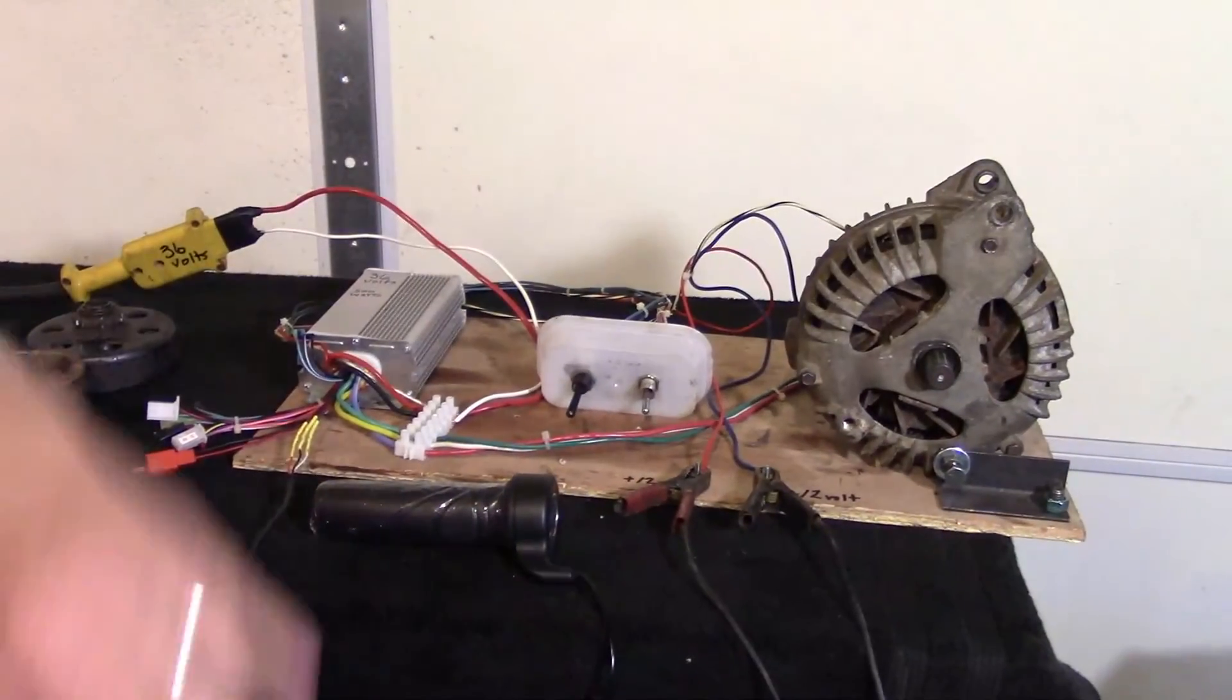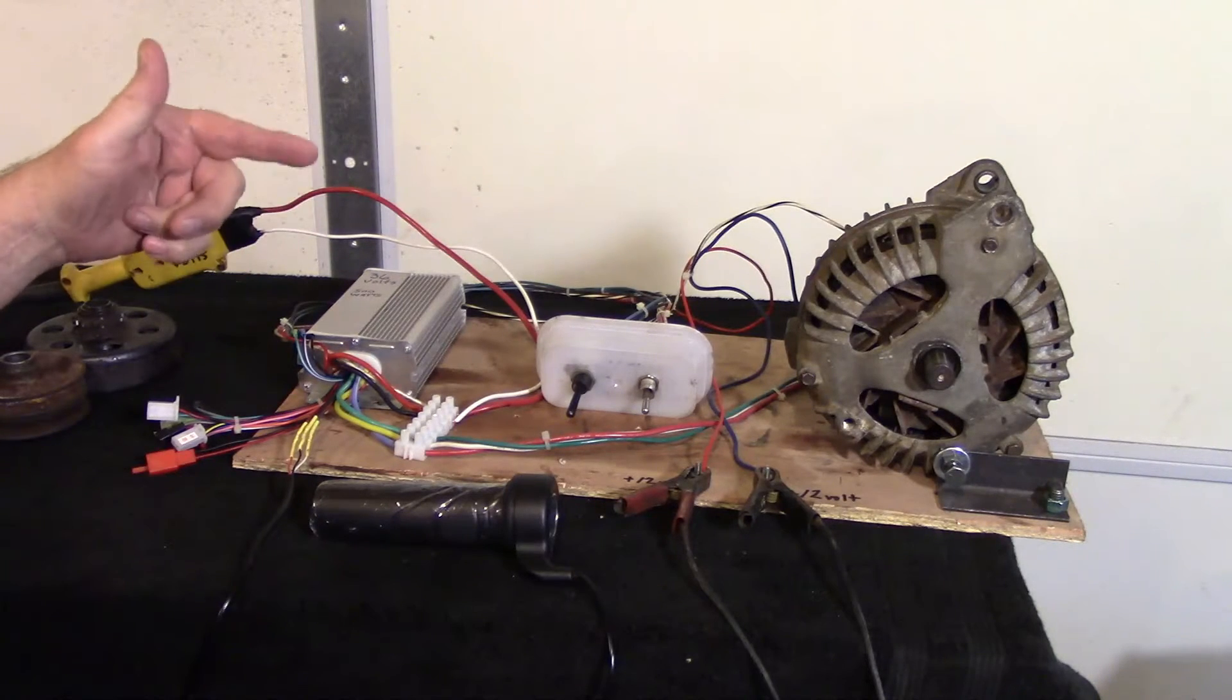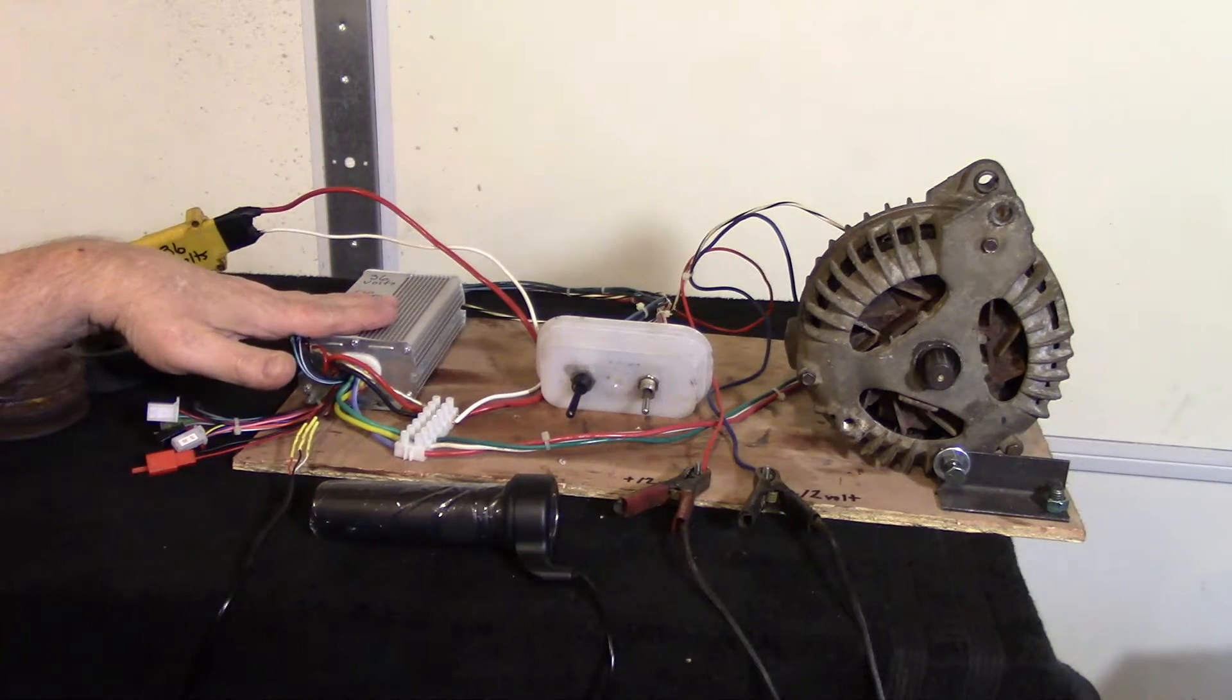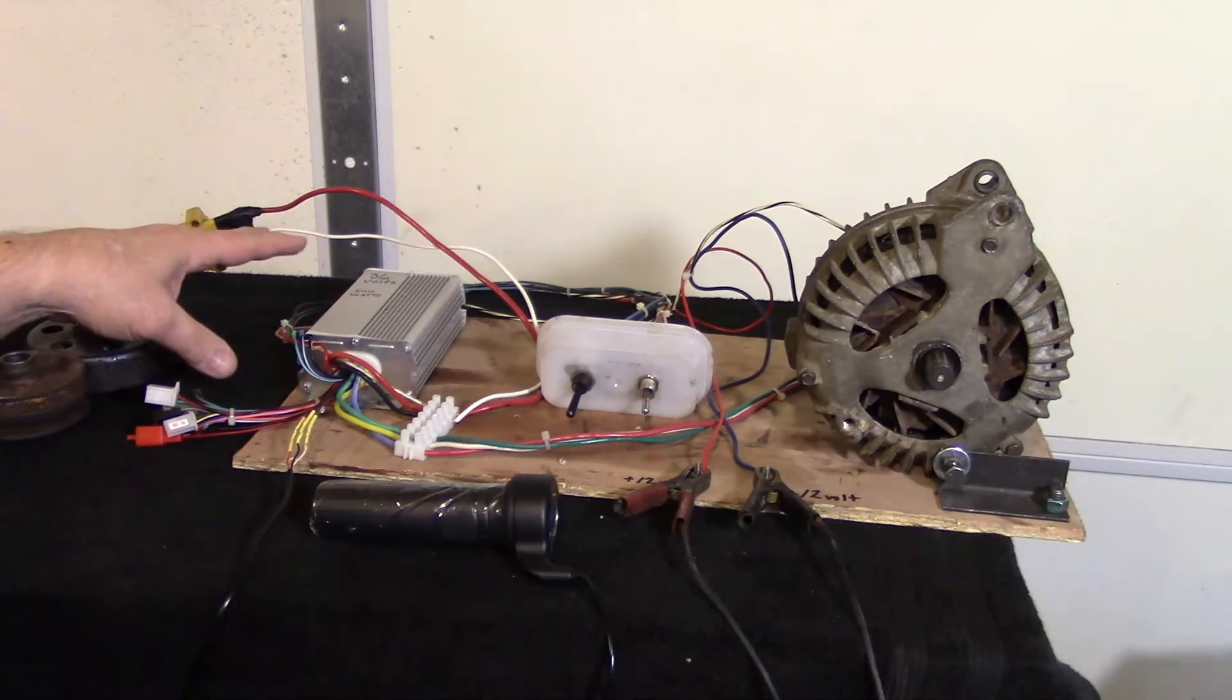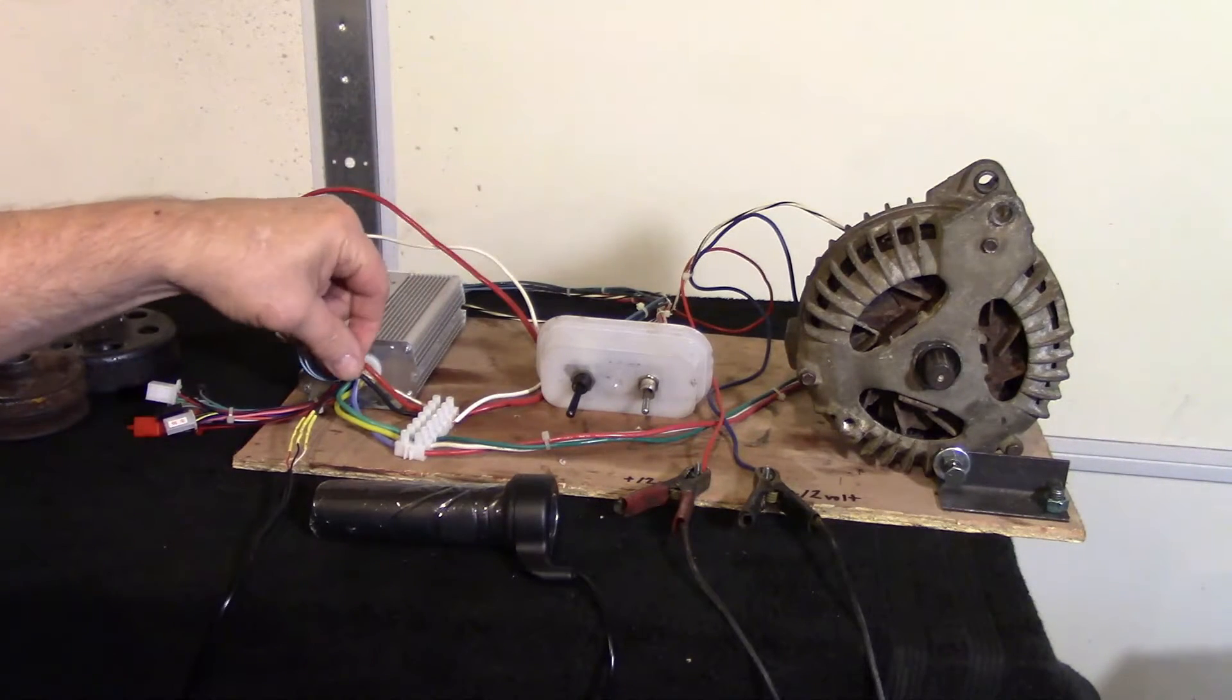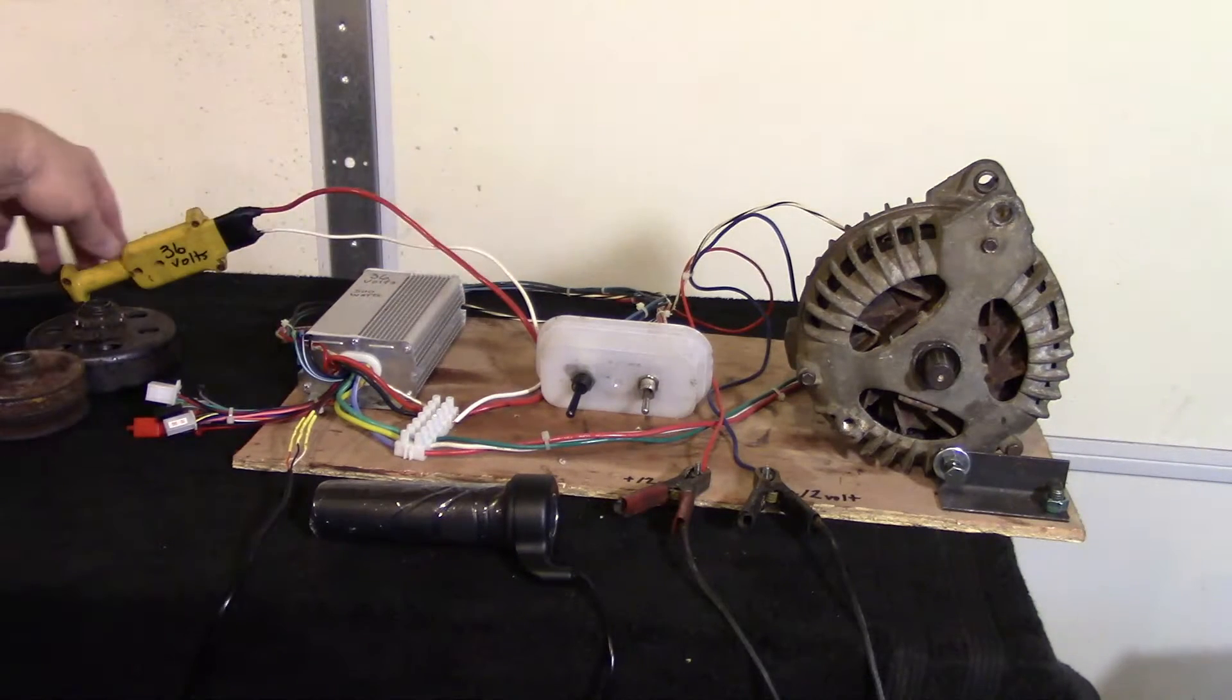Here's all the components for the alternator/motor project for the mini bike. This is a 36 volt speed controller. It comes with a bundle of wires and you only need about half of them, so half of these I'm not even going to use. The red and black is your positive and negative.